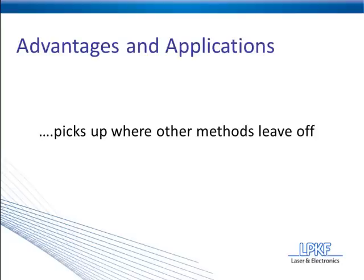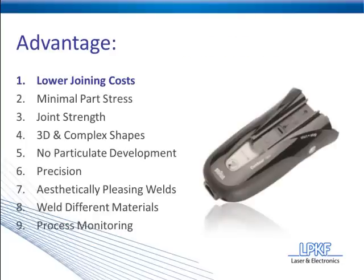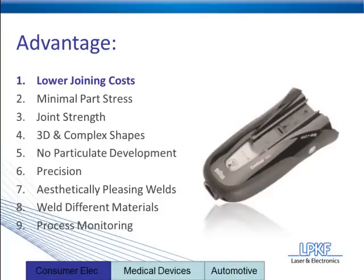This is the first of nine slides covering the advantages we're going to discuss. You can see each of those nine advantages listed on the left, and on the right you'll see pictures of each of the applications. As boxes slide up from the bottom, they'll tell you which of the three major industries each application falls into. Consumer electronics, medical devices, and automotive are the three main industries where you'll find laser plastic welding today. The major focus is really on medical devices and automotive, but consumer electronics is gaining some ground. Let's move into our first advantage: lower joining costs.